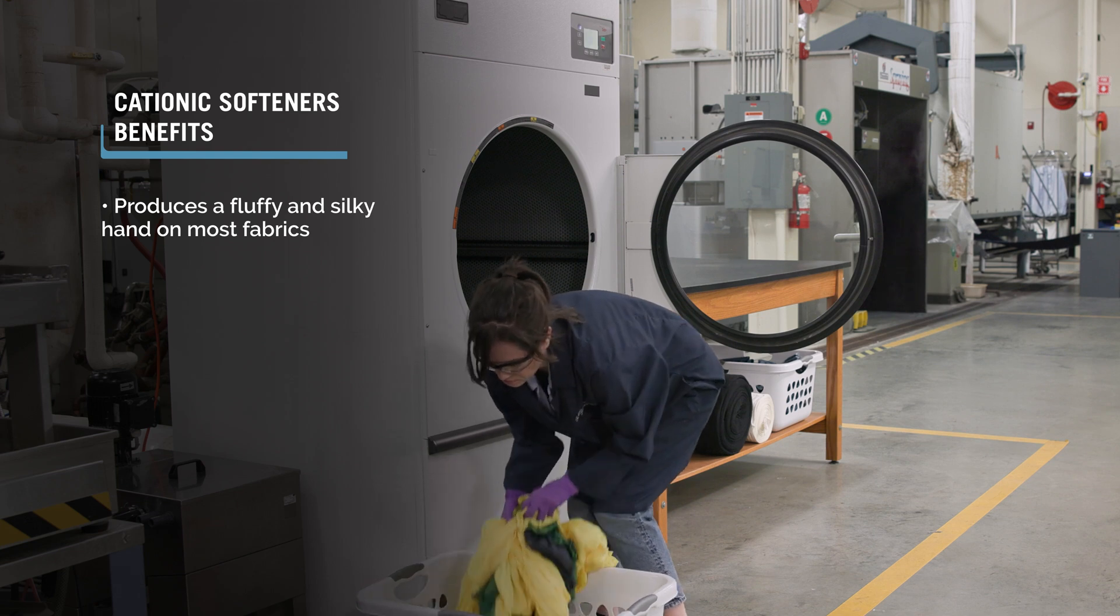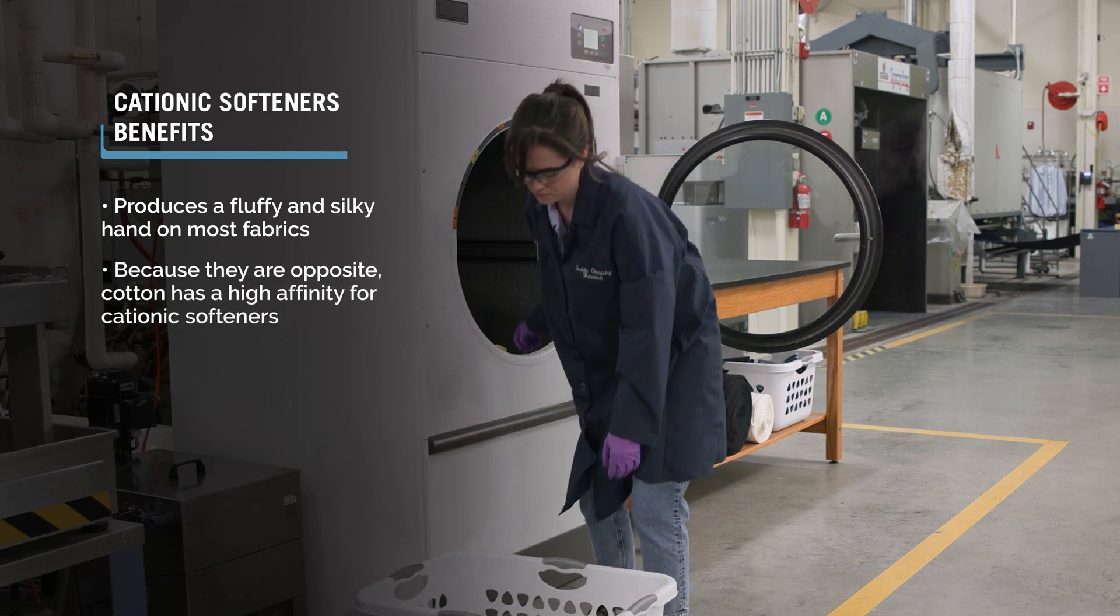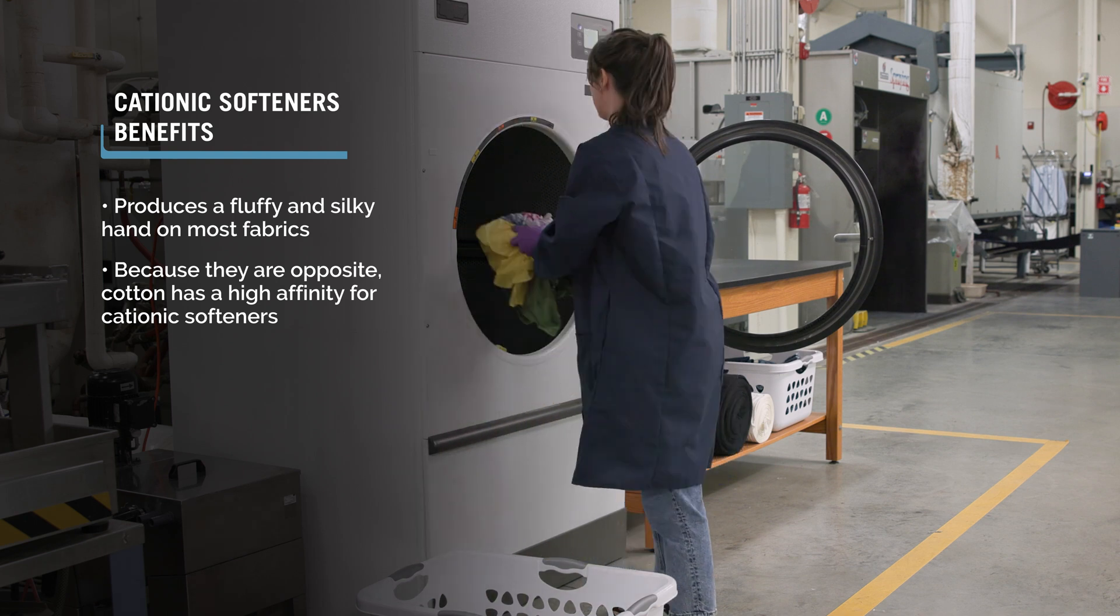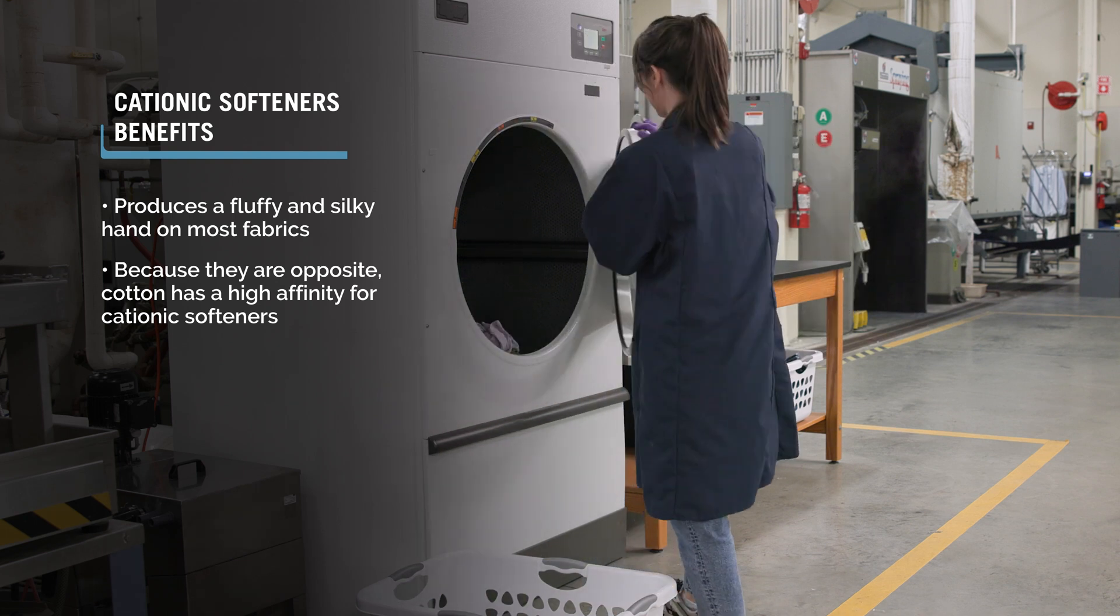Cationic softeners are positively charged and wet cotton has a negative charge. Because they are opposite, cotton has a high affinity for cationic softeners.